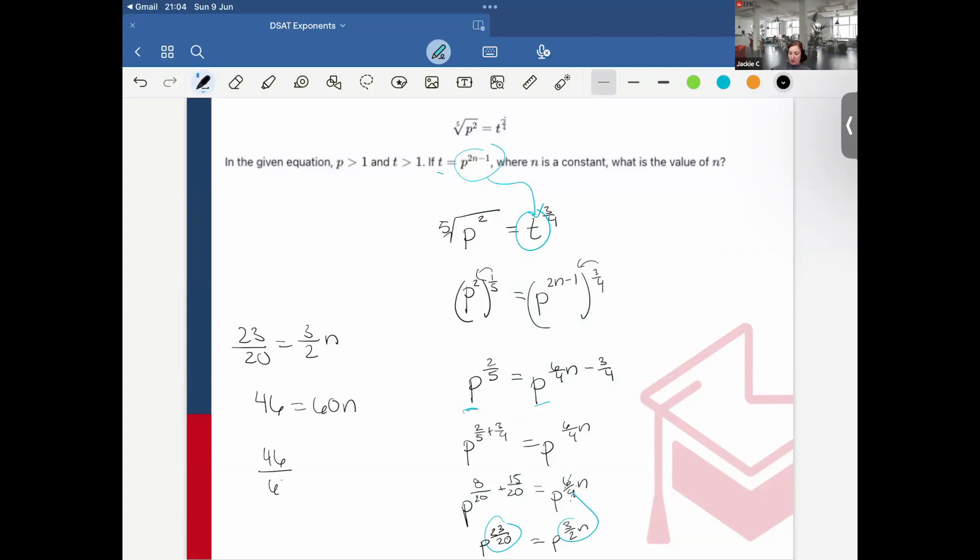So 46 over 60 is equal to n. Let's reduce that, divide everything by 2, and that would give me 23 over 30 equals n. And that would be the answer.